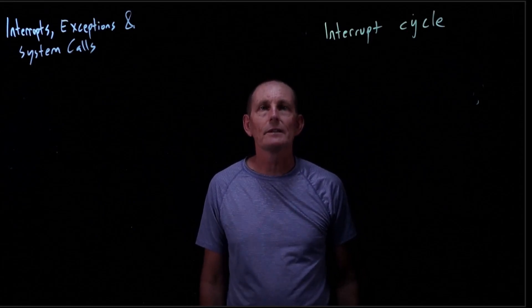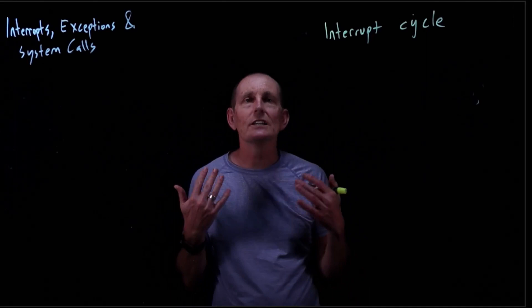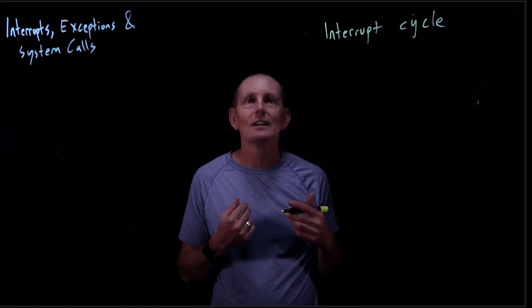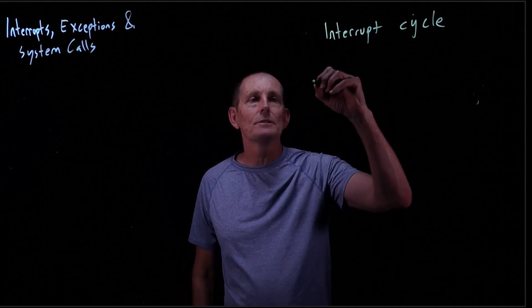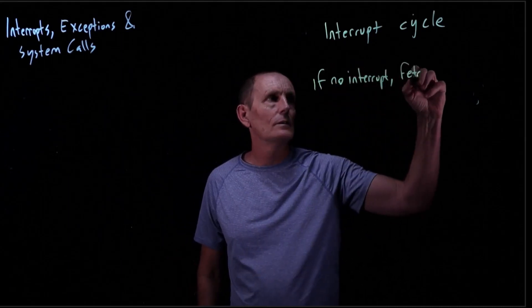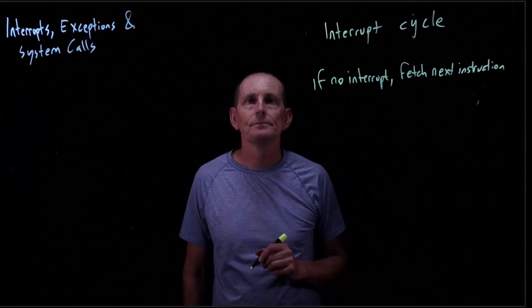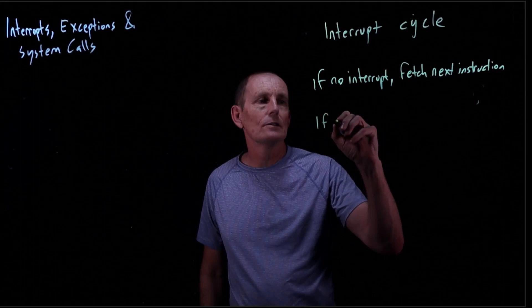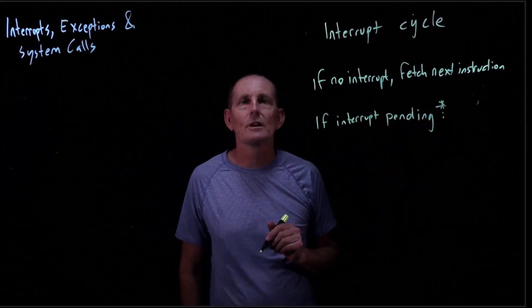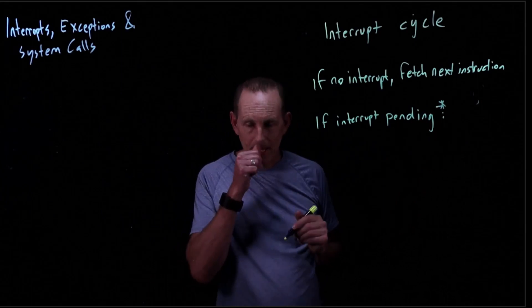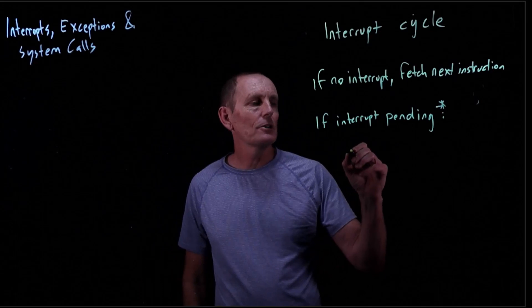Let's talk about the interrupt cycle. What happens is at the beginning of the fetch, decode, execute cycle, the CPU checks for interrupt. If there's no interrupt, then we fetch the next instruction. If there's one pending—I'm going to put an asterisk there because we're going to come back to it—then what happens? We're going to stop whatever is executing now.